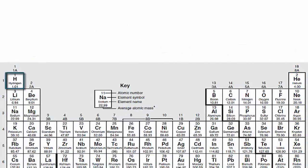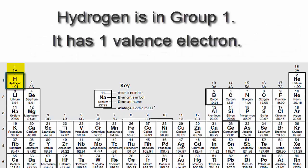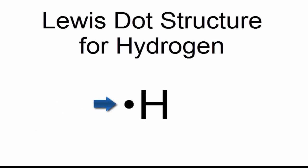Hydrogen is in group 1 or 1A. That means that it has one valence electron. So we'll take and put that one valence electron right next to the element symbol H for hydrogen.